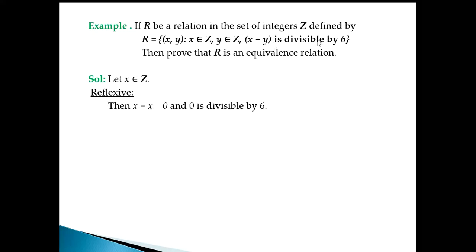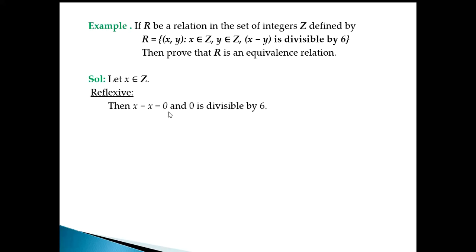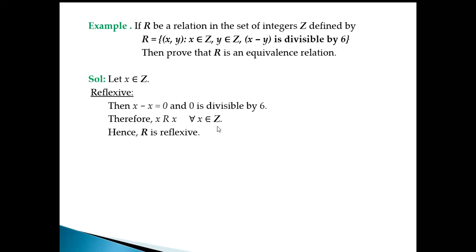For the reflexive check, we put x in place of both elements: x minus x equals 0, and 0 is always divisible by 6. This means the ordered pair (x, x) satisfies the property, so x is related to x for all x in the integers. Therefore R is reflexive.